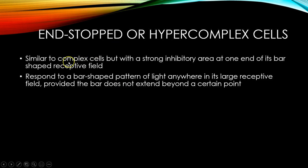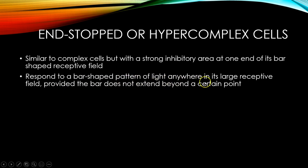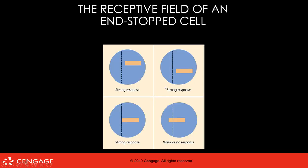End-stopped or hyper-complex cells are similar to complex cells, but they have a strong inhibitory area at one end of the receptive field. Our visual system is really good at detecting edges — that's sort of how we see different things in the world. An end-stopped cell responds to a bar-shaped or edge-shaped pattern of light anywhere in its receptive field, provided the bar doesn't go beyond a certain point. For example, a bar within the excitatory zone gives a strong response, and you get a strong response even when the bar moves. But if the bar crosses over into the inhibitory end-stopped zone, you get weak or no response.